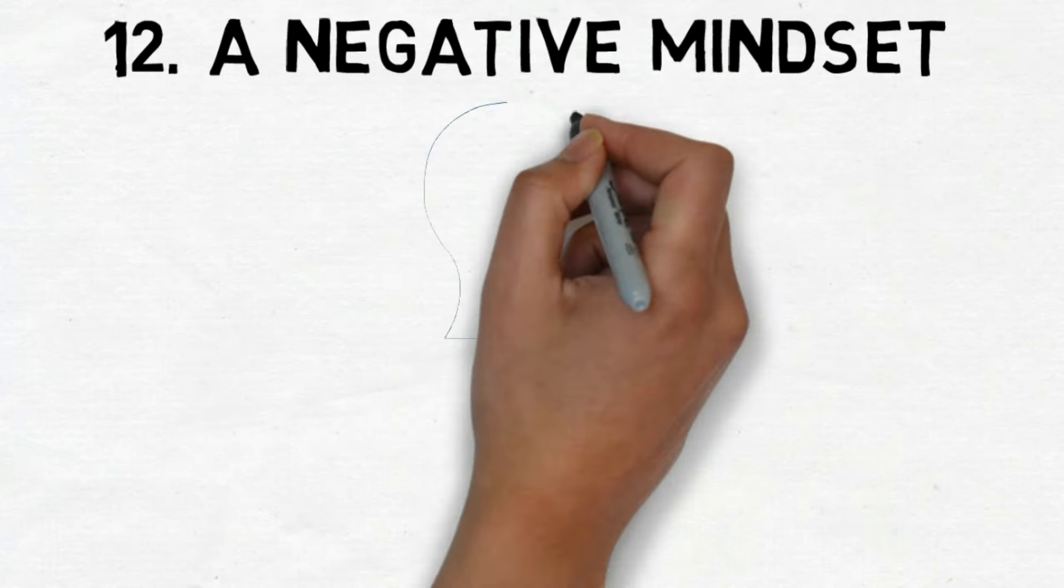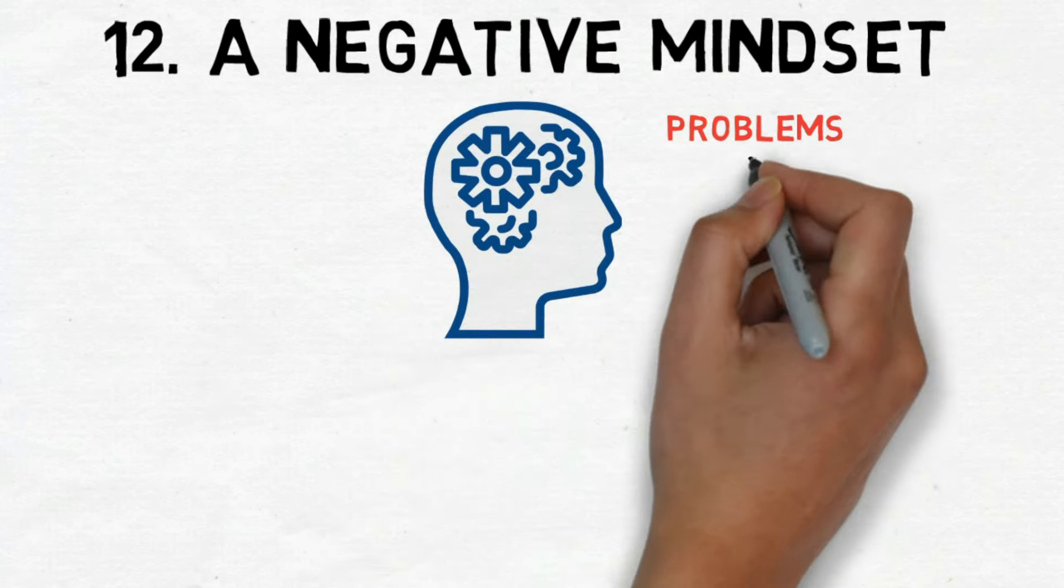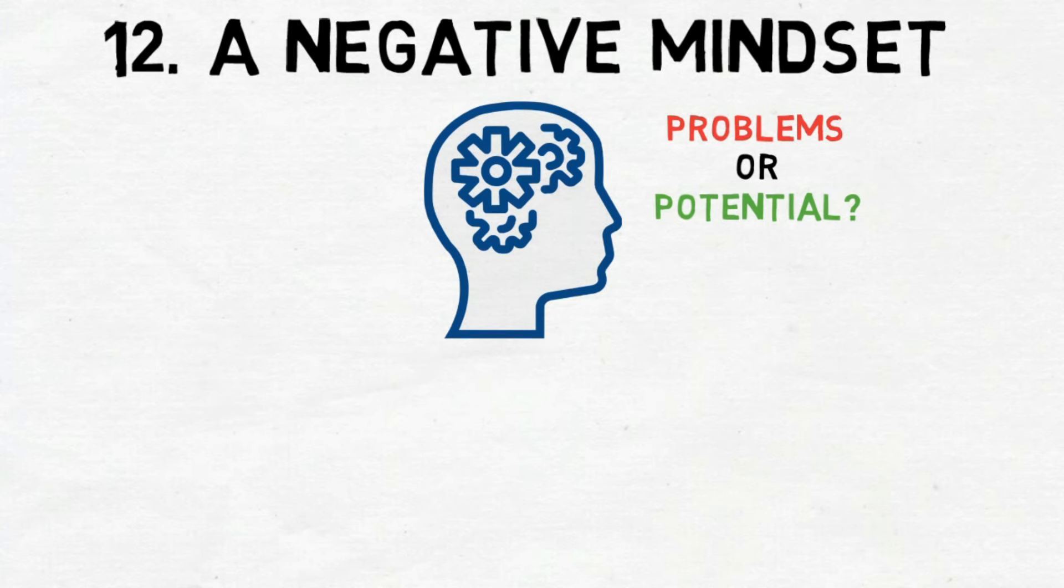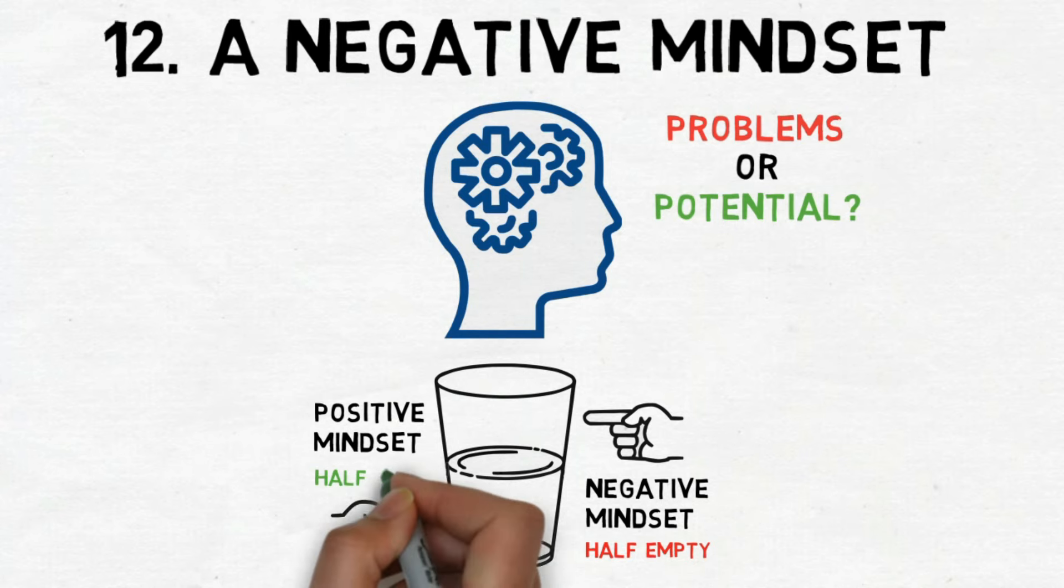And number 12. A Negative Mindset. What type of mindset do you possess? Do you usually see problems in every idea or do you see potential? A negative mindset perceives a glass as half empty, whereas a positive mindset views it as half full.